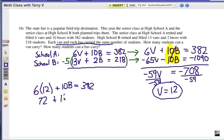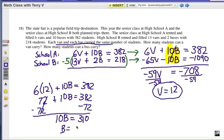72 from each side. 10B equals 310, and B equals 31. So, 31 students in every bus and 12 students in every van.